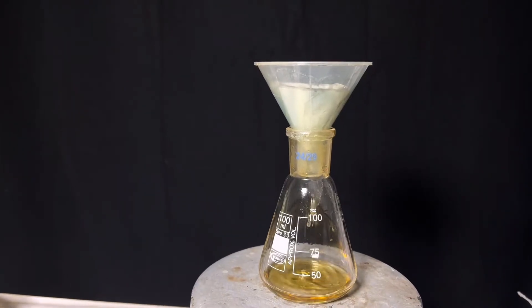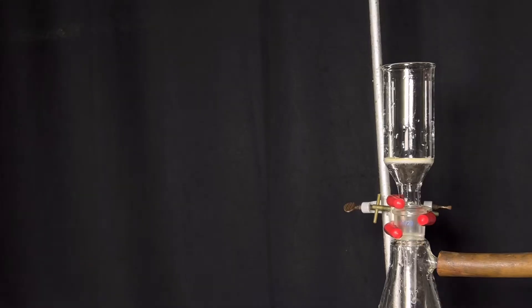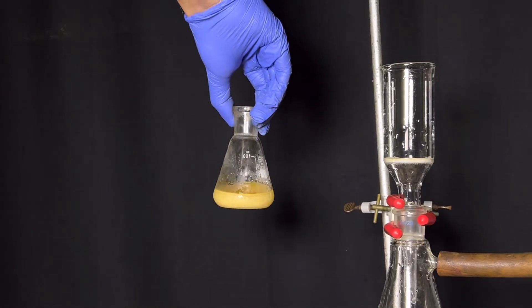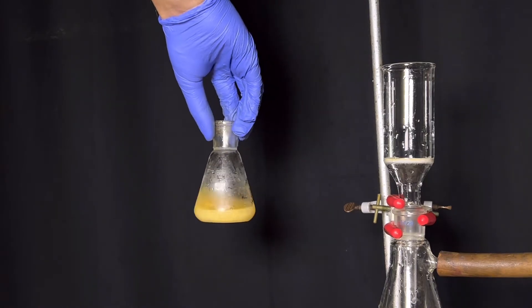Then the hot solution was filtered and the filtrate was allowed to cool to room temperature. After cooling it to room temperature, it was placed in a refrigerator overnight. The next day we got colorless plate-shaped crystals, and the final yield was 2.2 grams.